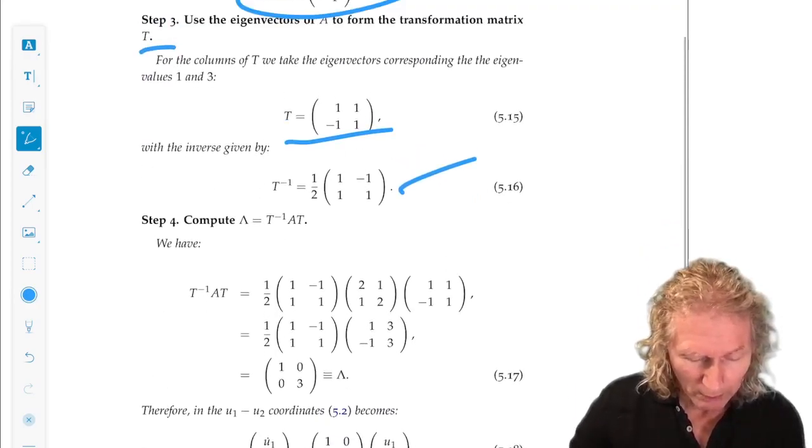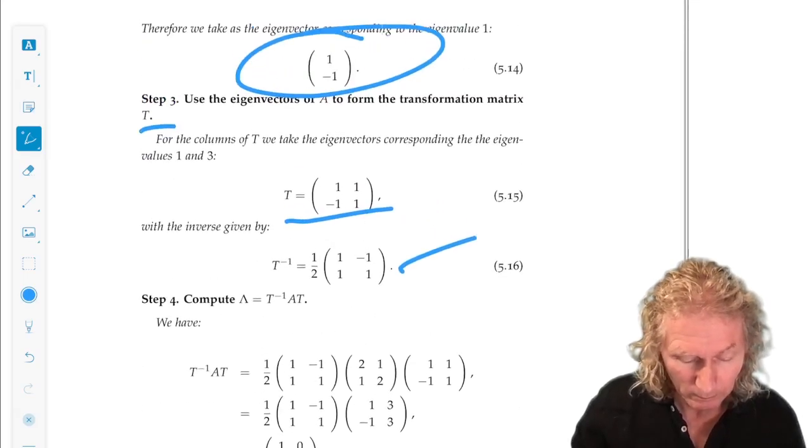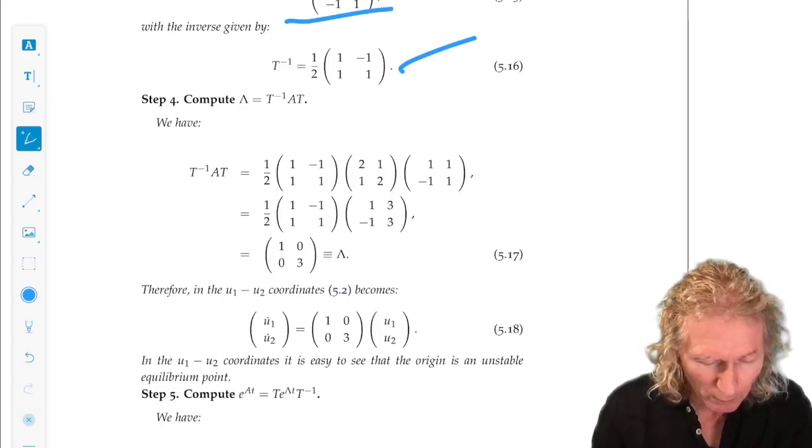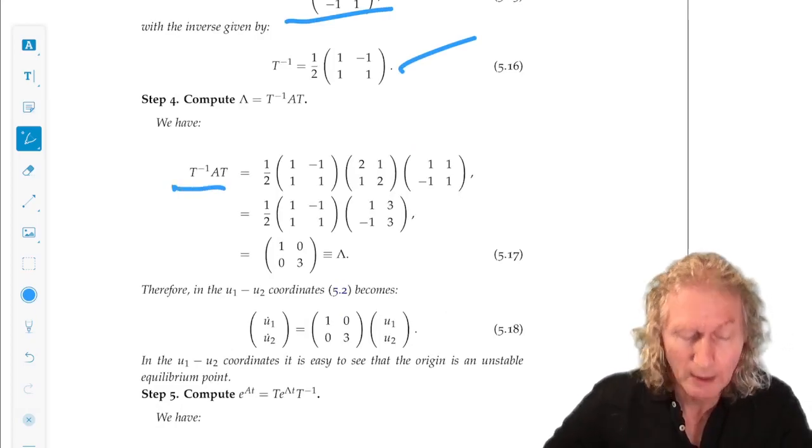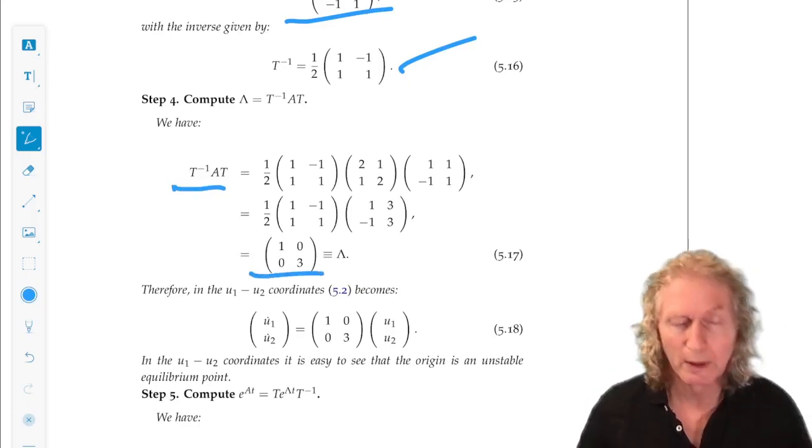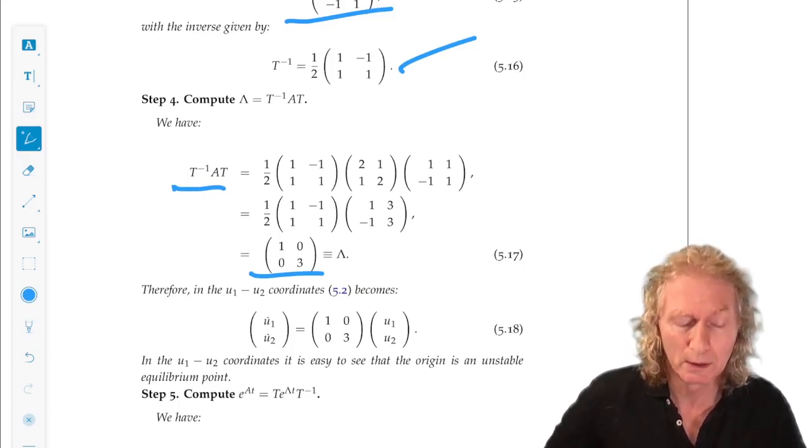So, once we have done that, we form T inverse A T. Now, that should be diagonal. And it is, with the eigenvalues down the diagonal, 1 and 3, corresponding to the order in which I put the eigenvectors in T.